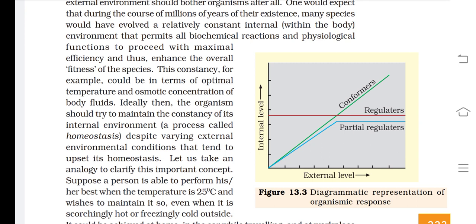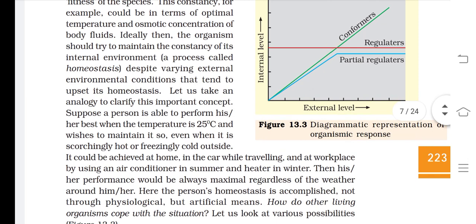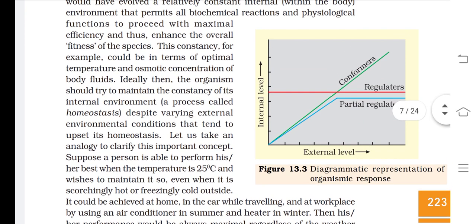For example, suppose a person performs best at 25 degrees centigrade and wishes to maintain it. Even when it is crushingly hot or freezingly cold outside, this could be achieved at home, in a car, and at the workplace by using AC in summer and a heater in winter, so that their performance would always be maximal regardless of the weather. Here, the person's homeostasis is accomplished not through physiological activities but through artificial means like AC and heaters.